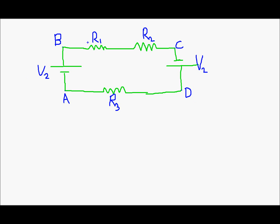Let's say this is my circuit. The first thing you should do is select a node, and from that node travel through the entire closed loop and reach back to that node. So let's say I will start from A, go to B, from B go to C, from C go to D and back to A. Let me assume that the current in the circuit flows in this direction. Let's say the current is I.